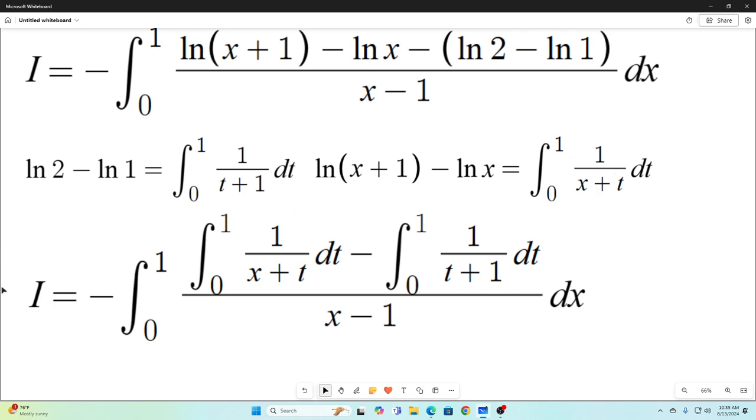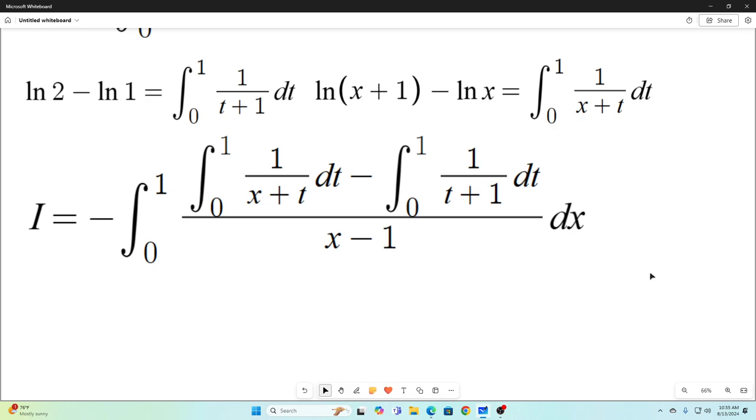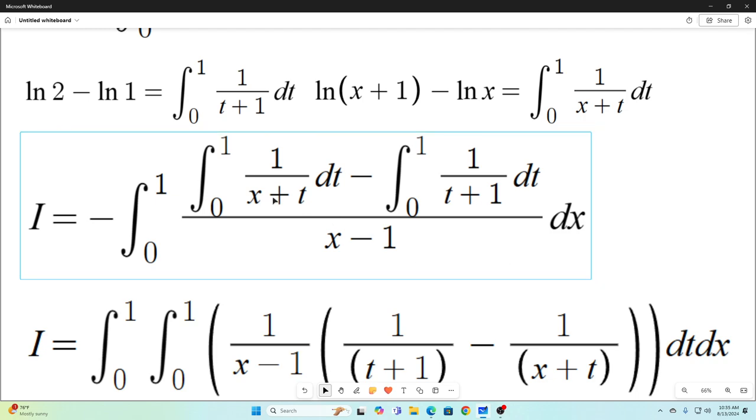So now this is our new representation for our original integral, and it seems like we're making it a lot worse, but trust me, we're not. This integral transforms nicely like this. Basically, I brought that 1 over x minus 1 inside both of these integrals. I did some algebraic manipulation, and we end up with this. That should be no problem.